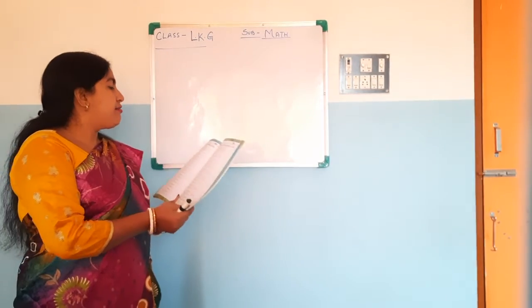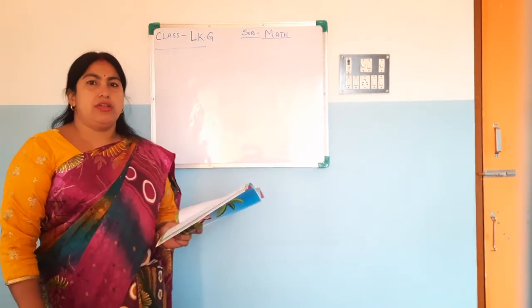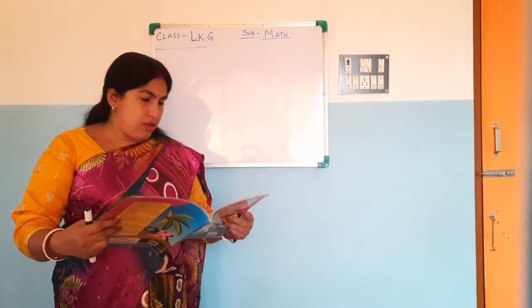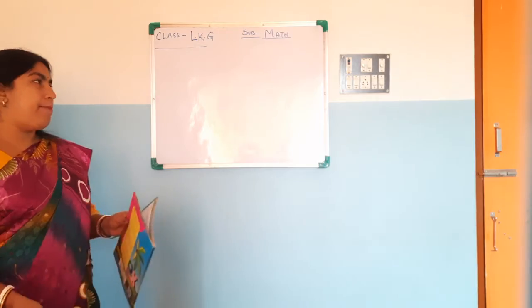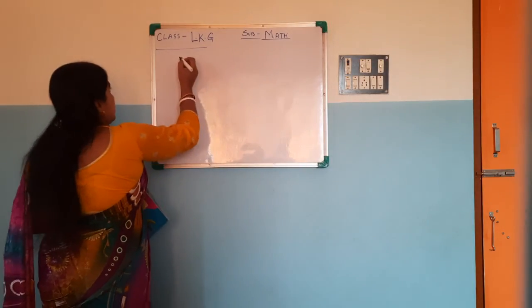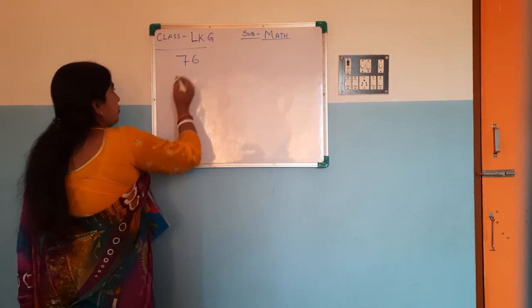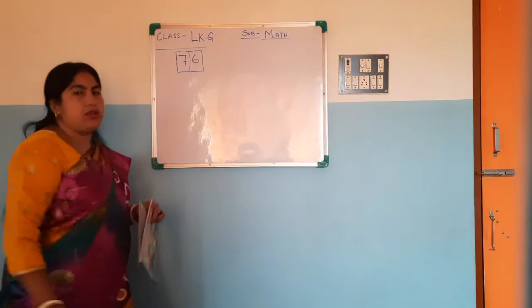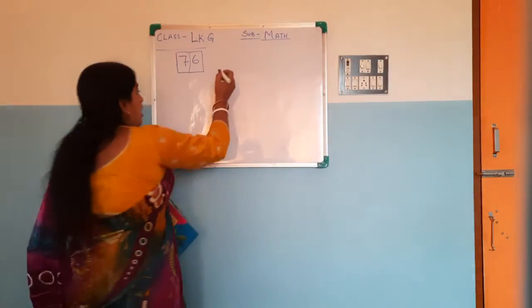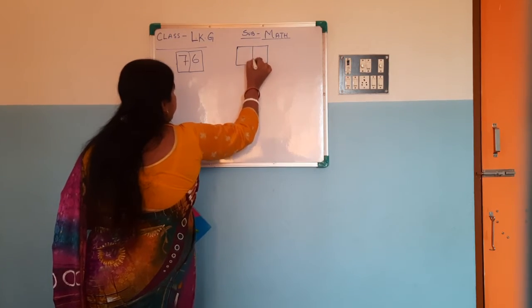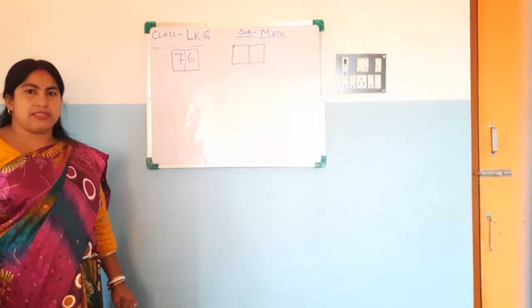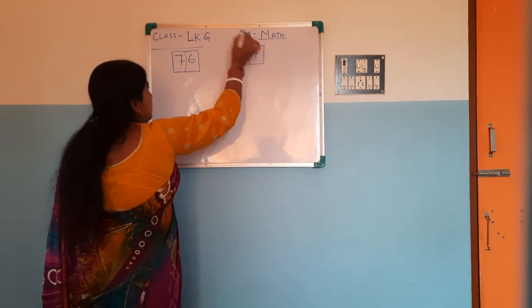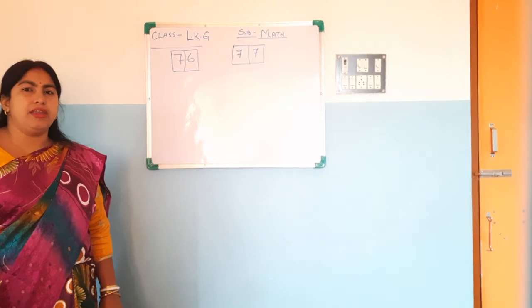Look what is written here: 'Write what comes after.' It is between 1 to 100, as we have done in our class. The number given is 76. And two empty boxes are given. So what comes after 76? The next number will be 77. Have you written it, all of you?